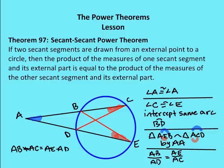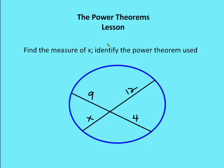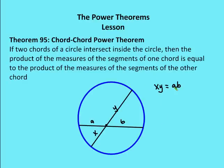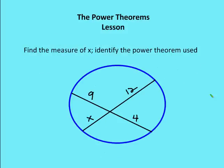Let's use these in a couple of problems. The first is to find the measure of X and identify the power theorem used. According to the chord-chord power theorem, XY equals AB, so 9 times 4 equals 12X. That gives us 36 equals 12X, and X equals 3. That's using the chord-chord power theorem.